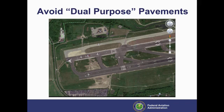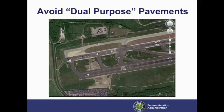Runways used as taxiways and taxiways used as runways can lead to confusion and create a potential for incursions and conflict between an airplane taxiing and one taking off or landing. A runway should always be clearly identified as a runway and only a runway. Such standardized markings ensure that a pilot encountering white runway markings or yellow taxiway markings will always at least be aware of whether he or she is on a runway or a taxiway, even if situational awareness is diminished.